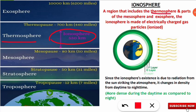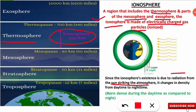Now we'll talk about the ionosphere. It lies mostly in the thermosphere region, but includes some parts of the mesosphere and exosphere — its extent changes from day to night. The ionosphere is made up of ions, which are electrically charged gas particles formed due to solar radiation striking the atmosphere. The sun's rays ionize gas particles, which are mostly concentrated in the thermosphere.